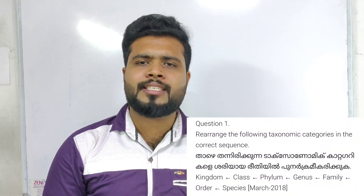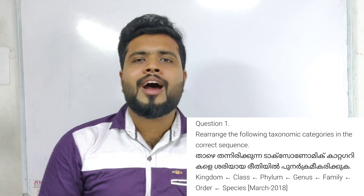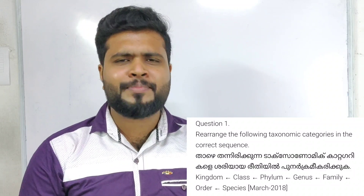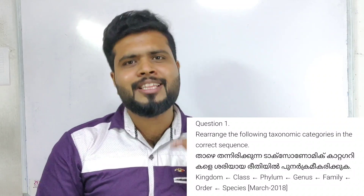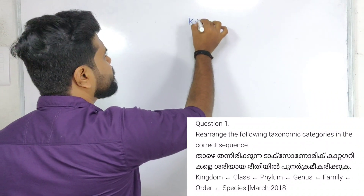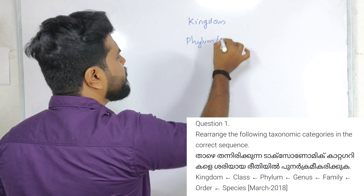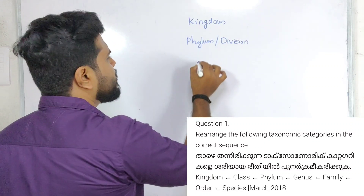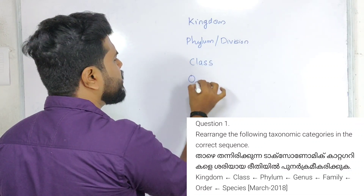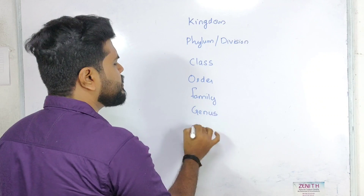Rearrange the following taxonomic categories into the correct sequence. We will start the next section in the taxonomic hierarchy: class, order, family, genus, species.